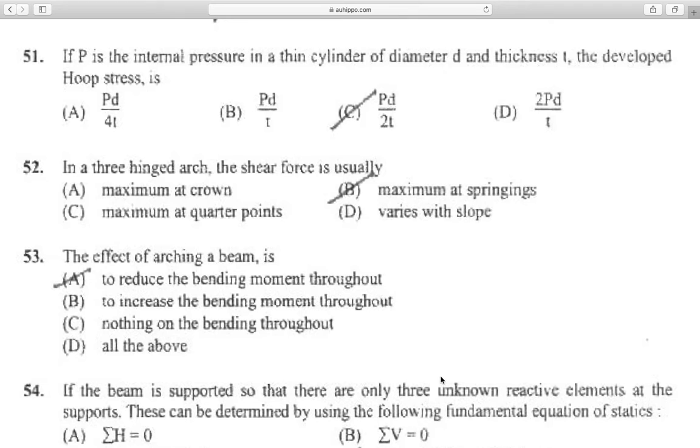Question 51: If P is the internal pressure in a thin cylinder of diameter d and thickness t, the developed hoop stress is pd divided by 2t. This is the formula.